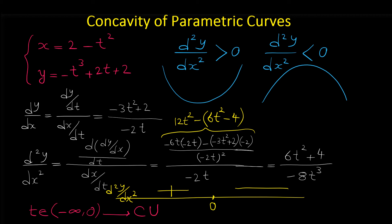Using a test point like t = 1 for the interval 0 to positive infinity, d²y/dx² is negative. So when t is in the interval 0 to positive infinity, the curve is concave down.